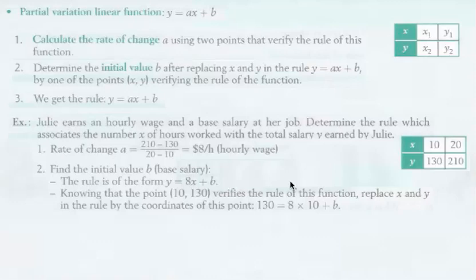So the y is replaced by 130, and the x is replaced by 10. So you have 130 is equal to 8 times 10, which is 80, plus b. So then we subtract 80 from both sides. 130 take away 80 is 50. So b is 50. So that means that Julie is earning a base salary of $50. So the rule for the whole thing is y equals 8x plus 50. And that's it for the partial variation part of our program. Have a good day.